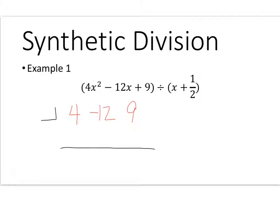Now inside the box is where my divisor goes. Since this is a positive one half, I'm going to put a negative one half in this box. So again, divisor, the constant of the divisor, I change the sign and put that inside the little box. The coefficient of each number goes outside the box.